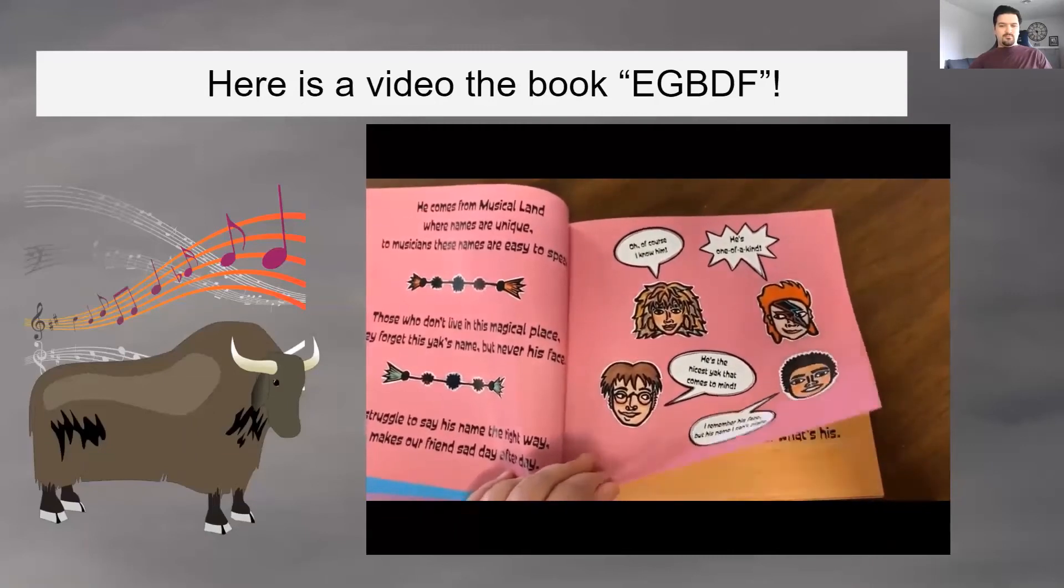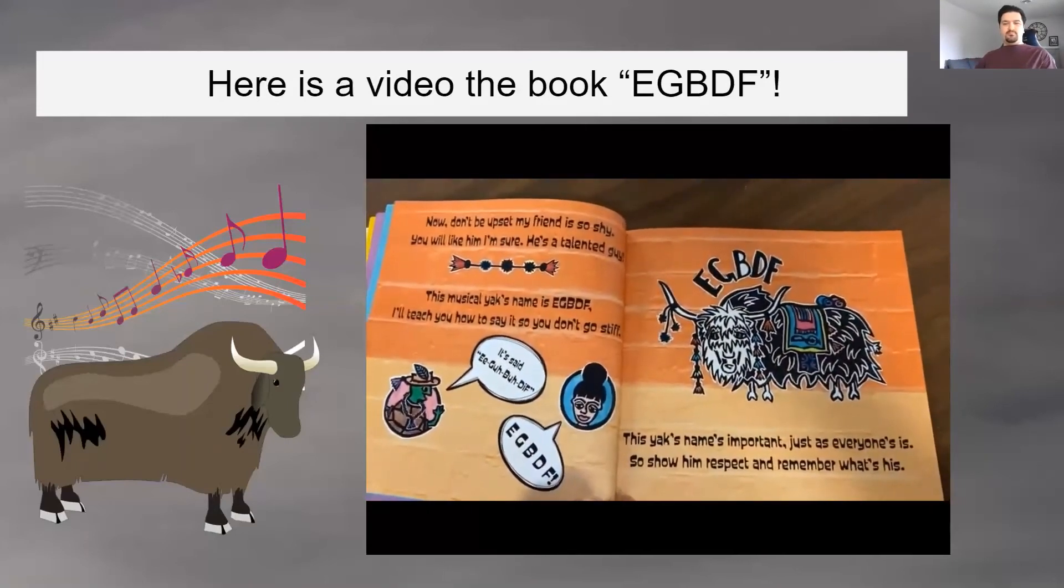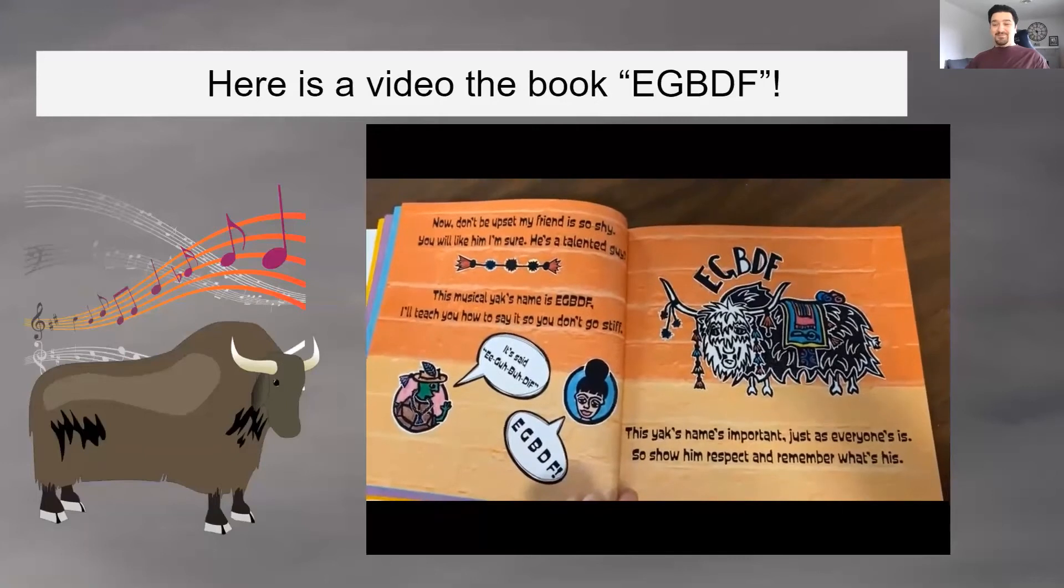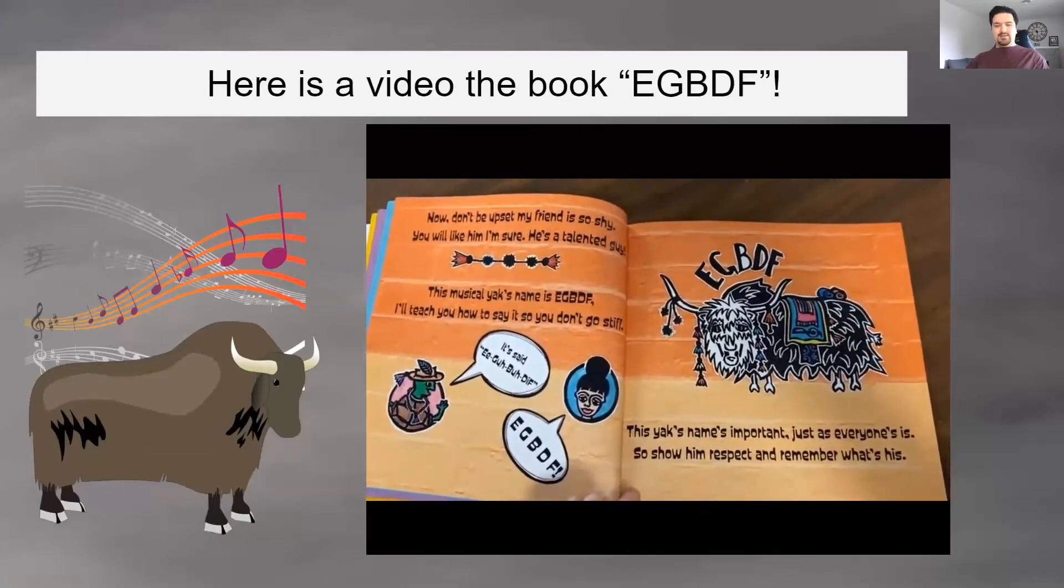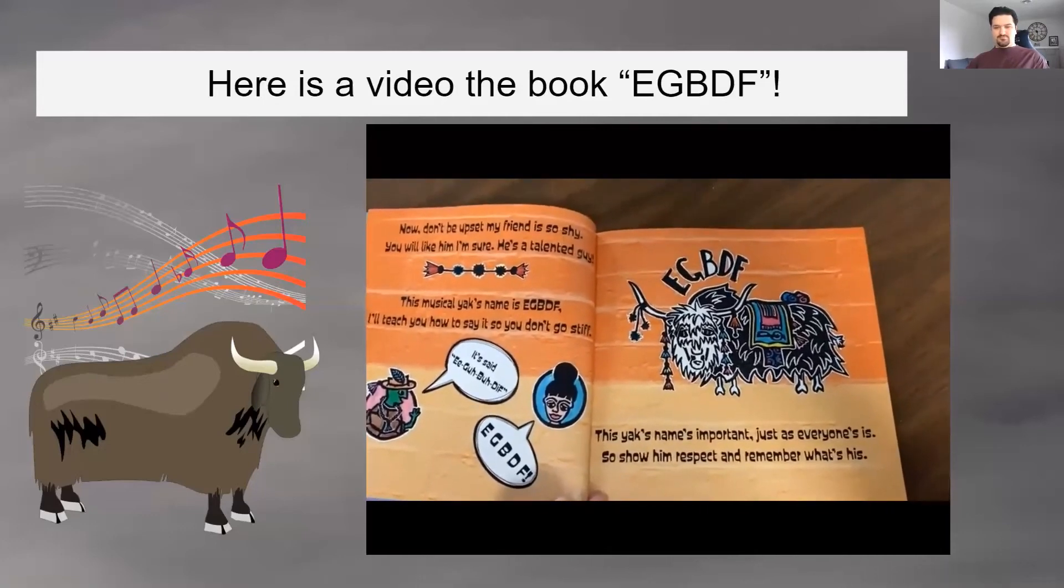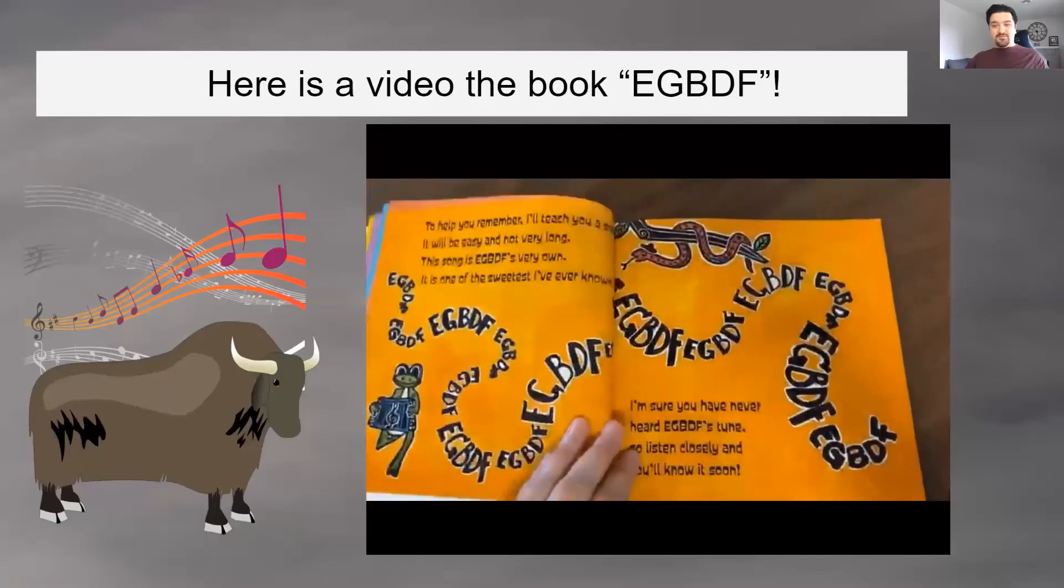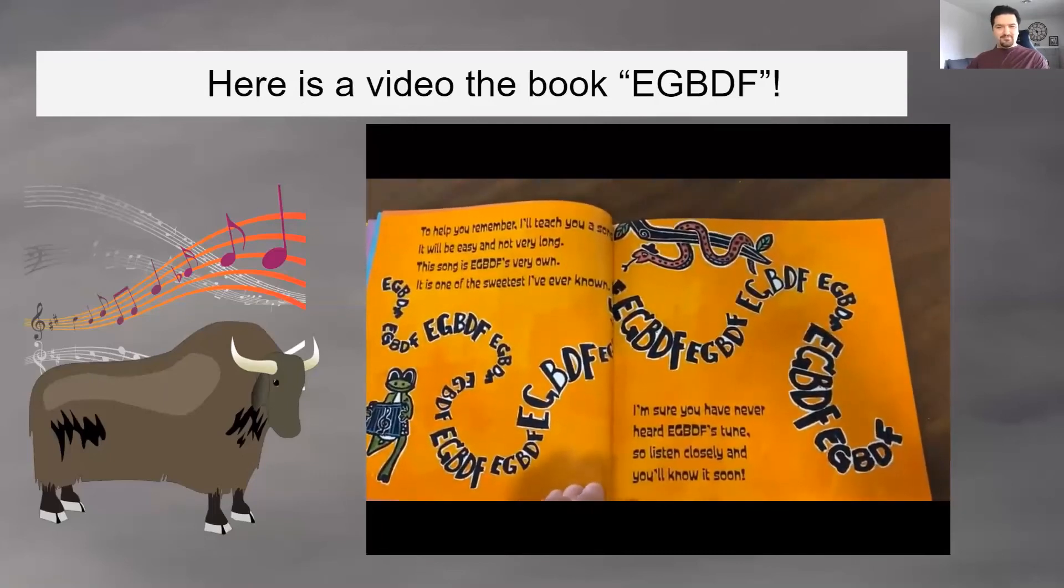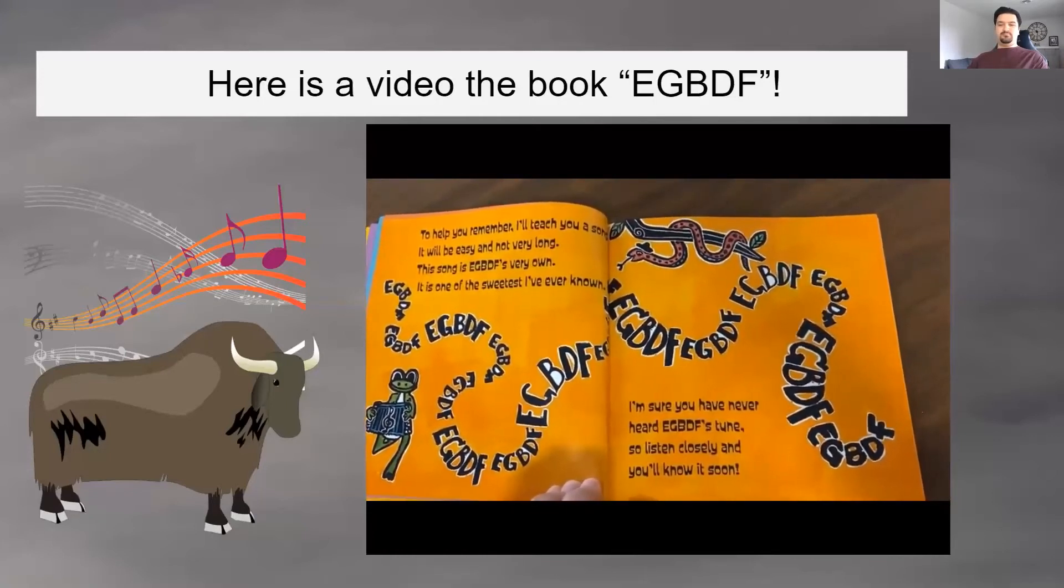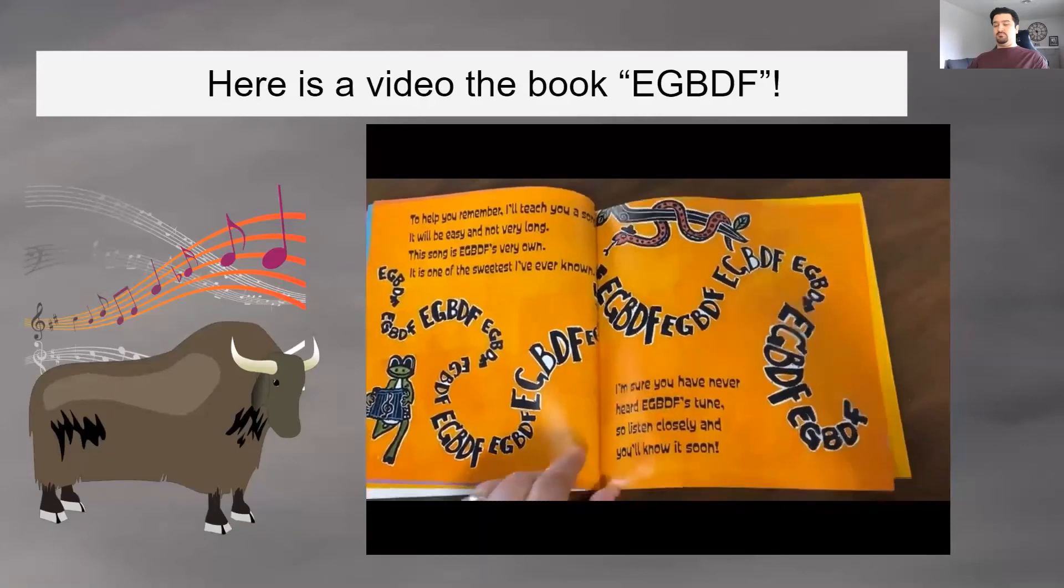He comes from Musical Land, where names are unique to musicians. These names are easy to speak. Those who don't live in this magical place, they forget this yak's name, but never his face. They struggle to say his name the right way, which makes our friend sad day after day. Oh, of course I know him. He's one of a kind. He's the nicest yak that comes to mind. I remember his face, but his name I can't place. Now, don't be upset my friend is so shy. You will like him, I'm sure. He's a talented guy. This musical yak's name is EGBDF. I'll teach you to say it so you don't go stiff. It's said EGBDF. EGBDF.